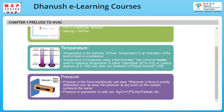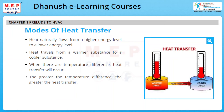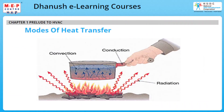Now let's look at the modes of heat transfer. Heat naturally flows from a higher energy level to a lower energy level — in other words, heat travels from a warmer substance to a cooler substance. When there are temperature differences, heat transfer will occur. The greater the temperature difference, the greater the heat transfer. The three modes of heat transfer are conduction, convection, and radiation.